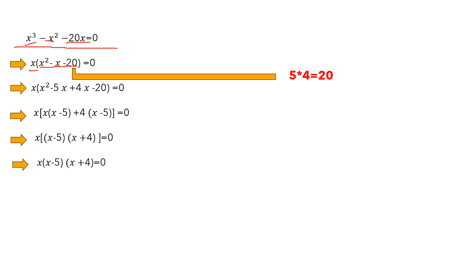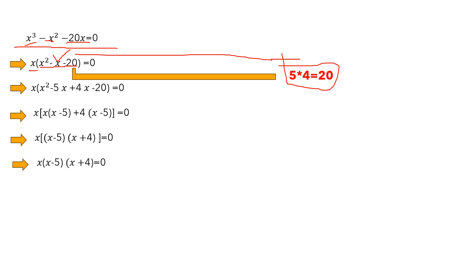We know how to solve this — if we have an equation of the form x squared plus or minus some constant, we can solve it. We can write 20 as 5 times 4, so we rewrite as x squared minus 5x plus 4x minus 20, which is the same as the previous equation.